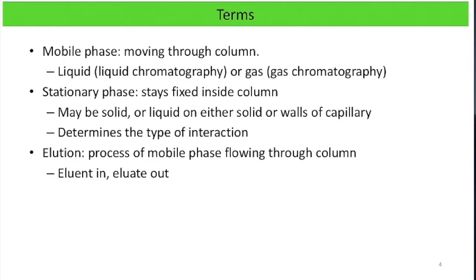Elution is the process of the mobile phase flowing through the column. When you put something into a column, it's called the eluant. When something comes out of a column, it's called the eluate.